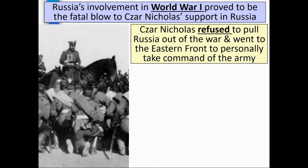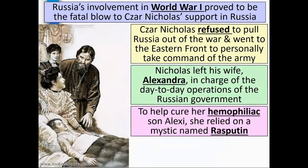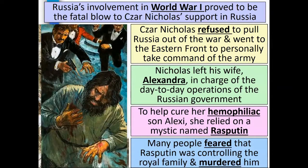Tsar Nicholas refused to pull Russia out of the war and went to the Eastern Front to personally take command of the army. Nicholas left his wife, Alexandra, in charge of the day-to-day operations of the Russian government. To help cure her hemophiliac son, Alexei, she relied on a mystic named Rasputin. Many people feared that Rasputin was controlling the royal family and murdered him.